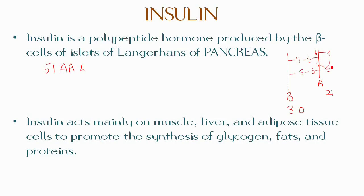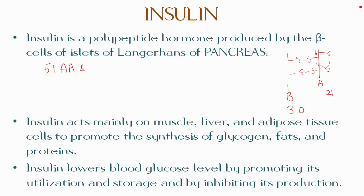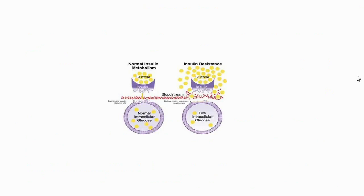Insulin acts mainly on muscle, liver, and adipose tissue cells to promote the synthesis of glycogen, fats, and proteins. Insulin lowers blood glucose levels by promoting its utilization and storage and by inhibiting its production.